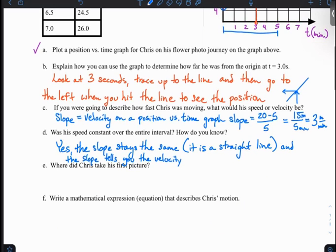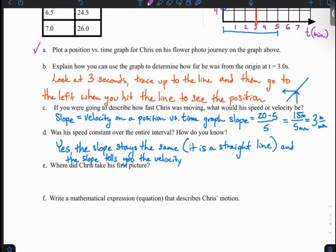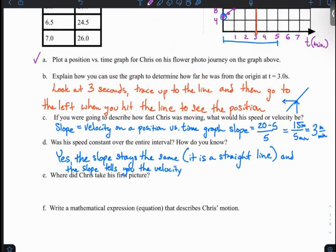The next question is, where did Chris take his first picture? So the first picture he took was at time 0. And so I can look at my y-intercept for that. So looking at the graph at time 0, it's at 5 meters. So I'm looking at the y-intercept.